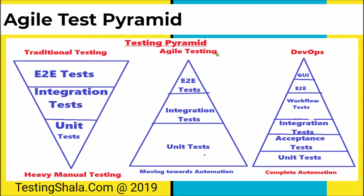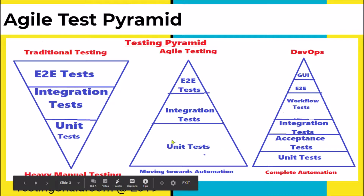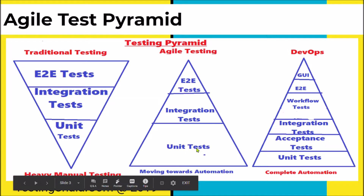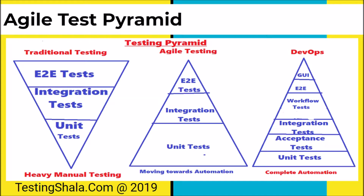Agile testing is a continuous integration and continuous deployment method where we do more testing at the beginning of the release itself — this is what we call shifting the testing to the left. From a development perspective, earlier all testing used to happen at the end, but now almost all testing is done at the unit test level itself. The developer implements and develops more unit test cases as and when new code is added, ensuring nothing breaks from previously written code.